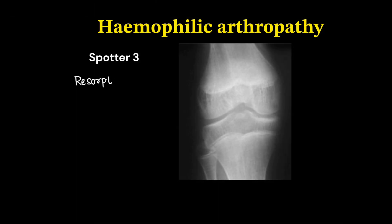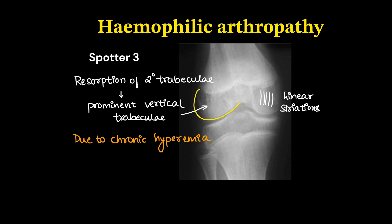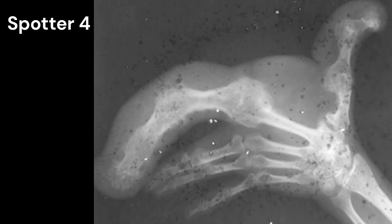This is an X-ray depicting hemophilic arthropathy — there is resorption of secondary trabeculae with prominent vertical trabeculae remaining, seen as linear striations. This happens due to chronic hyperemia. Later on there will be an enlarged medial epicondyle. This is an early stage X-ray.